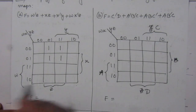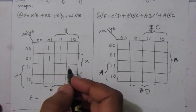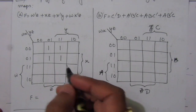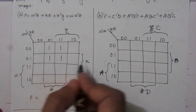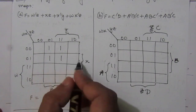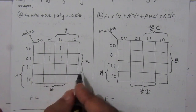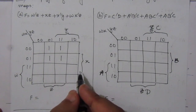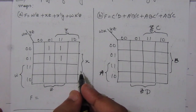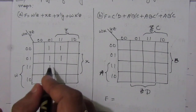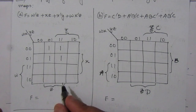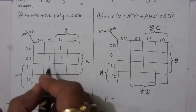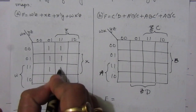Then we have XZ. XZ means X equals one for the second and third rows, and Z equals one for the second and third columns, so we put one-one there.